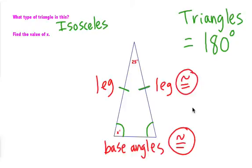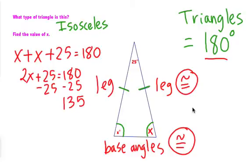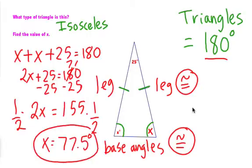So if this angle is x, this one is also x. We know the triangle adds up to 180, so x plus x plus 25 equals 180. That gives us 2x plus 25 equals 180. Take away 25, so 2x equals 155. Divide it out — we get 77.5 degrees. So each of those base angles is 77.5. You can double-check your work: 77.5 plus 77.5 plus 25 equals 180.